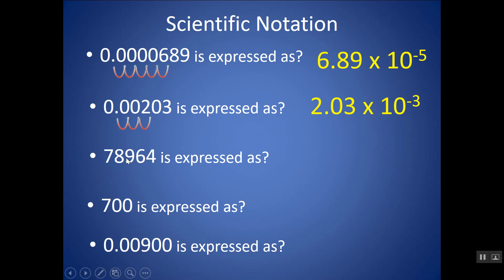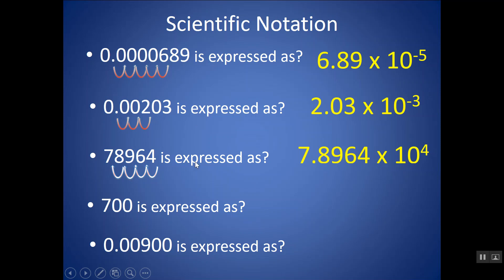This number is larger than 1, so I expect the exponent to be positive. There's no decimal, so we place it at the end and keep moving until we get a number between 1 and 9.99 — moving 1, 2, 3, 4 places to create 7.8964. Keep all those numbers because they're all significant, all non-zeros — times 10 to the positive 4. Numbers less than 1 get negative exponents; numbers greater than 1 get positive exponents.